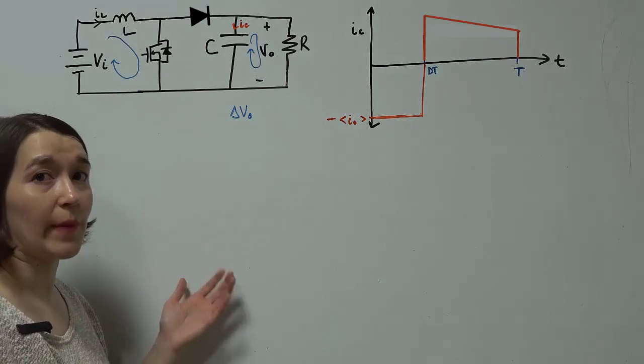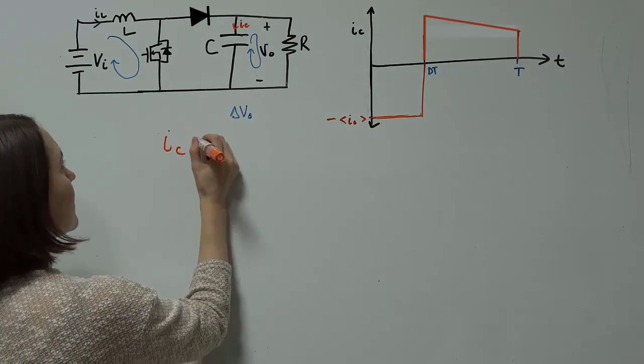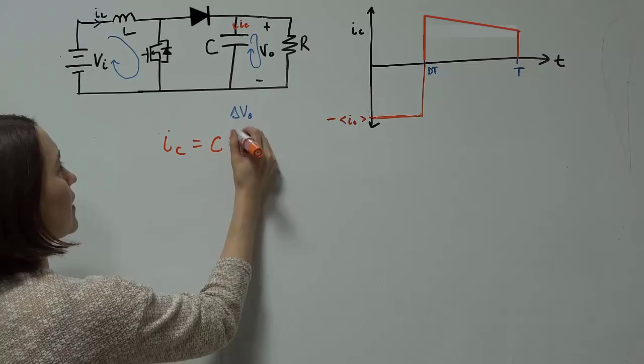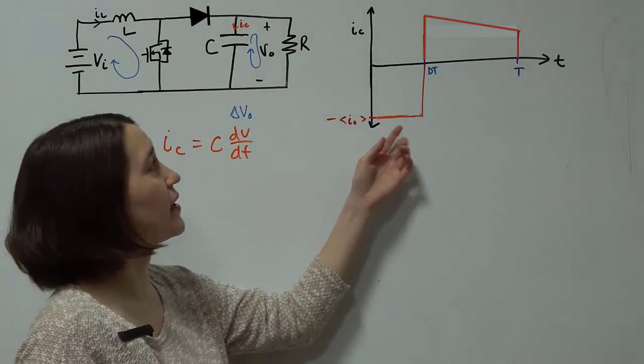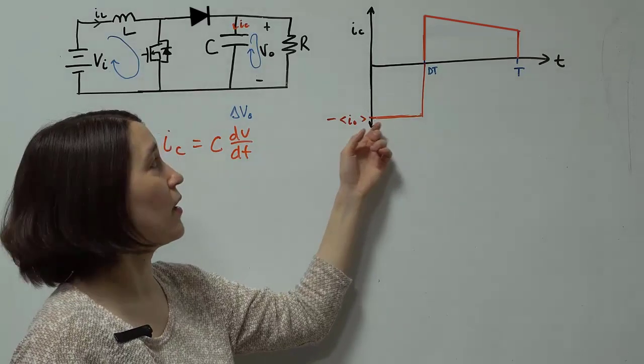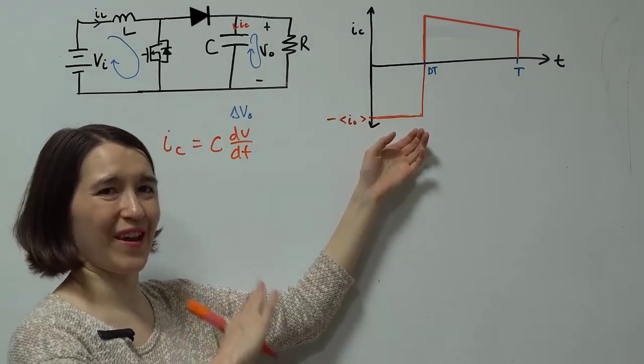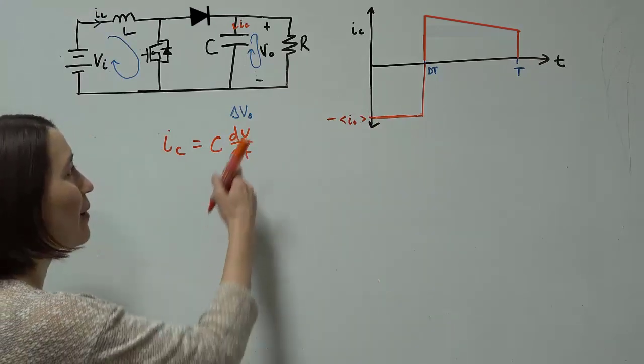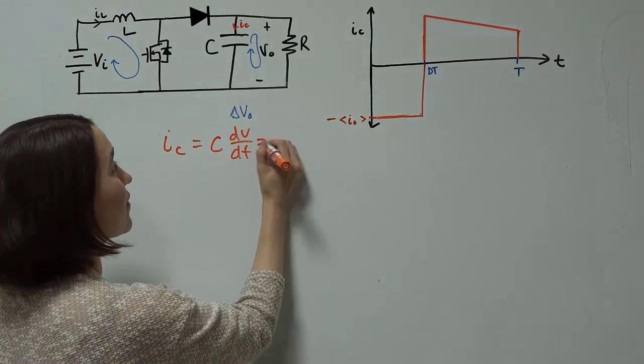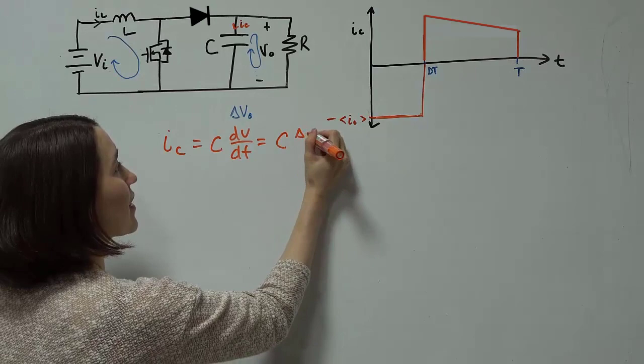We can start with the capacitor equation. So IC equals C dV/dt. And we're going to be looking at just the on time of the on switch phase, from zero to DT here. And that means we can make these deltas instead of Ds.